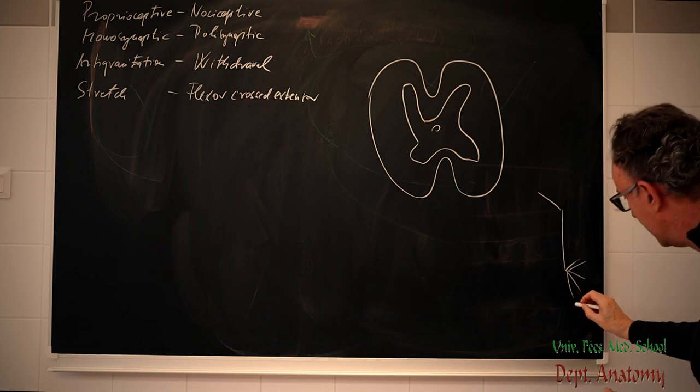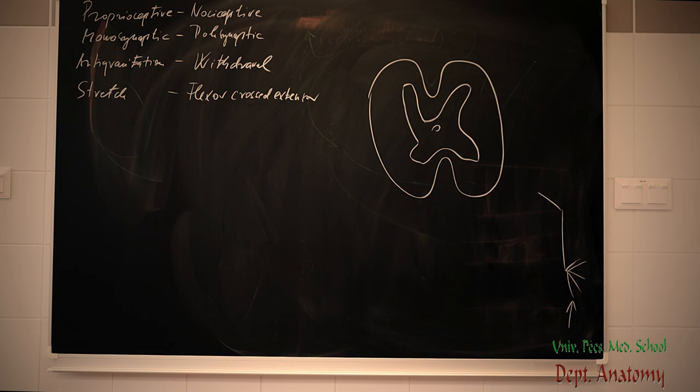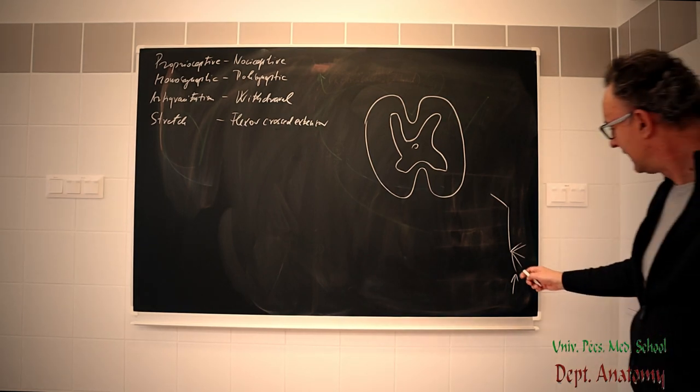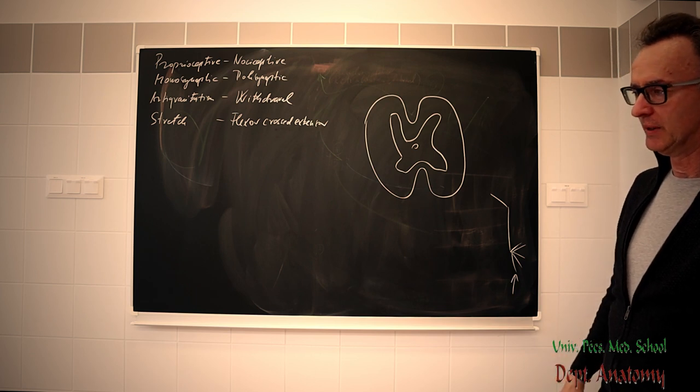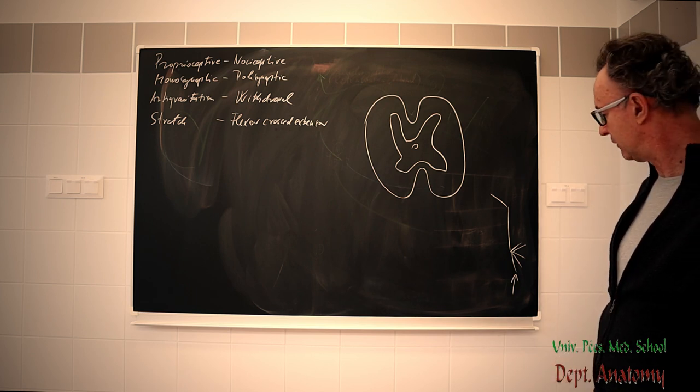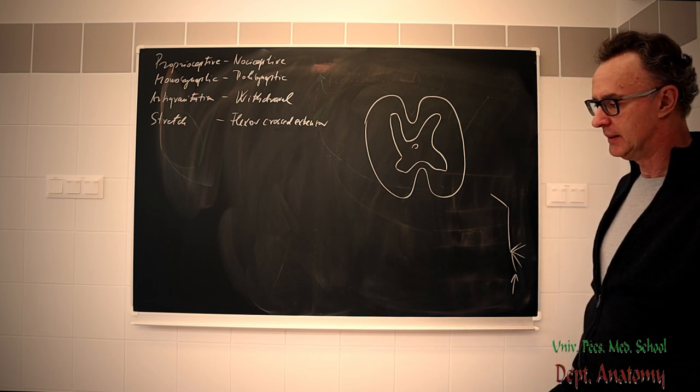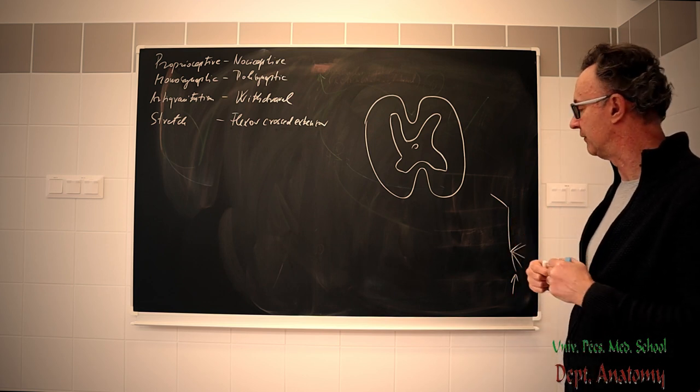So, the stimulus will be, in case of a painful stimulus, can be a needle in the sand, when you are watching the girls on the beach. Something like this. And what happens? Immediately, without thinking on it, you will remove the given extremity from the painful side. You will shorten the given extremity, activating the so-called functional flexors.